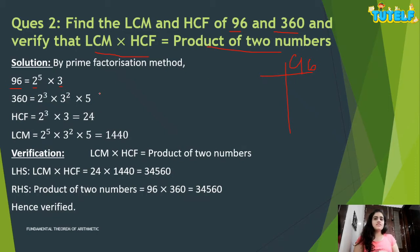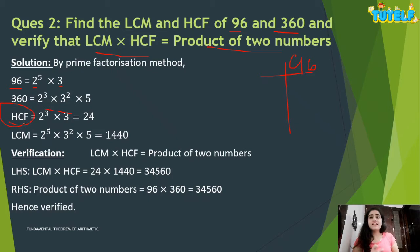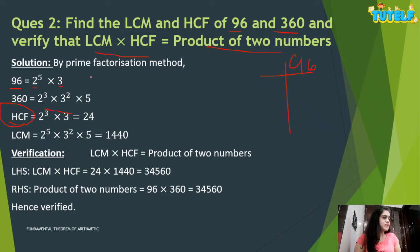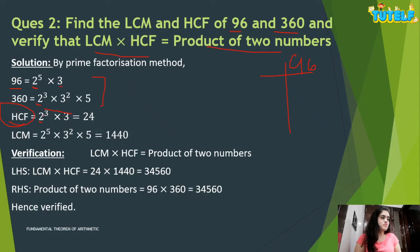360 can be written as 2 raised to power 3 into 3 squared into 5. For HCF, take the common factors with the smallest power. The factor 2 is common; smallest power is 2^3. For 3, the smallest power is 3^1. So HCF = 2^3 × 3^1 = 24.